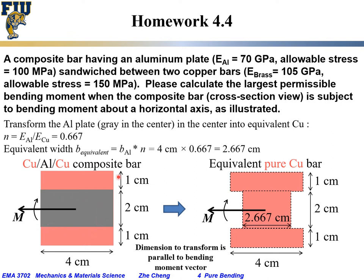The cross section is 4 cm in one direction, with aluminum thickness 2 cm and each copper bar 1 cm thick. We want to calculate the largest permissible bending moment when the composite bar is subjected to bending about a horizontal axis. The moment vector points to the left, meaning the beam bends concave up (ends up) when viewed from the side.